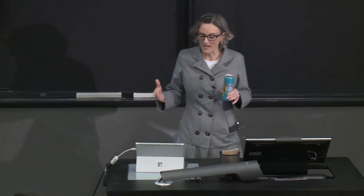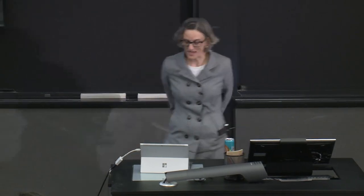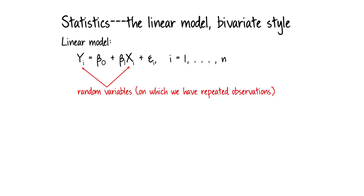In each of these examples, we had two or more random variables with a joint distribution. We wanted to know the characteristics of their joint distribution in order to answer the questions we were interested in. The workhorse model to do this is the linear model. Let me introduce the linear model in the bivariate case and then generalize that later, going through and defining the components.